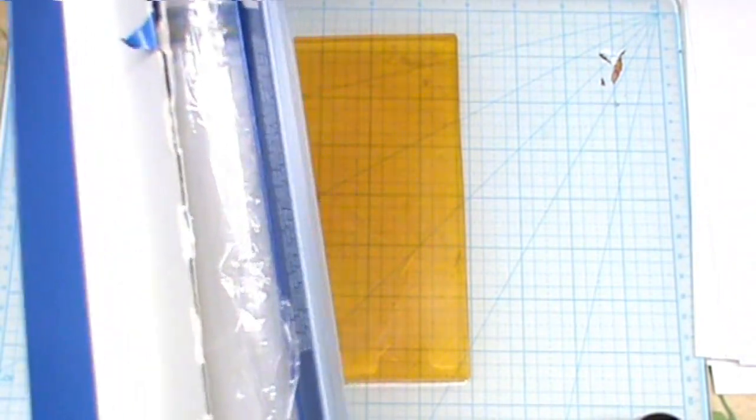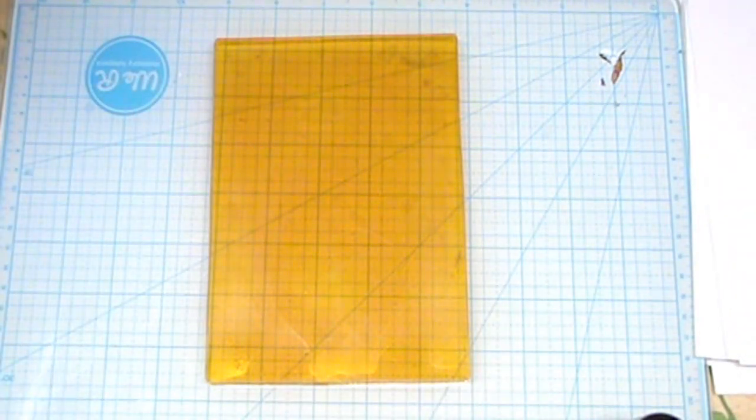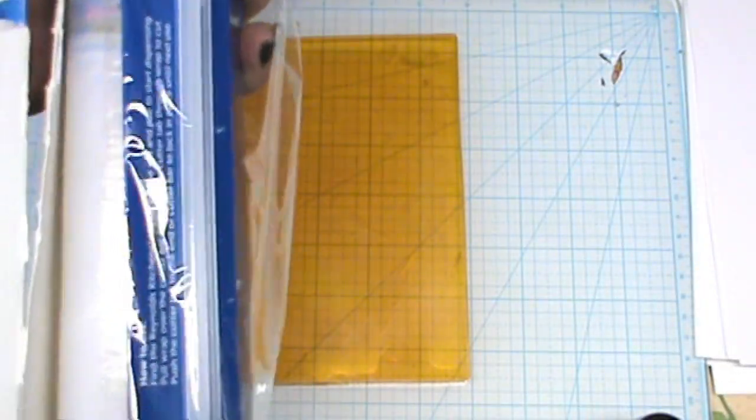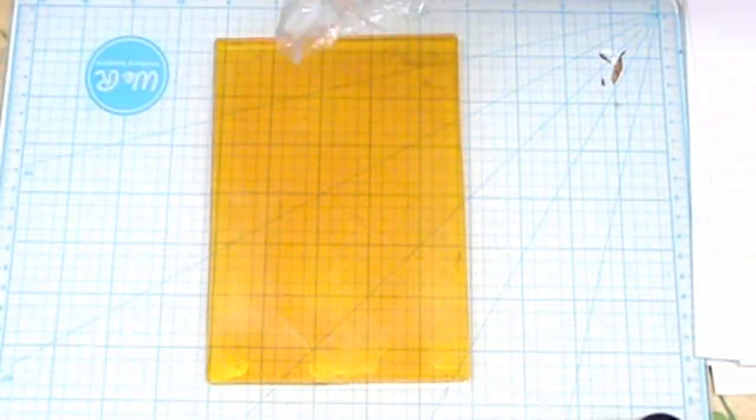To do this technique you're going to need some saran wrap or plastic wrap or whatever you've got, and some alcohol inks. Here I'm just making it out, cutting it off, scrunch it up.